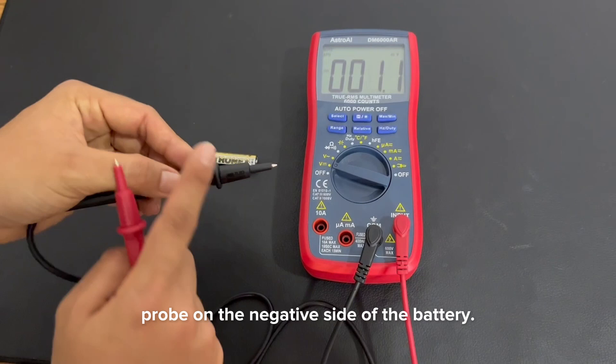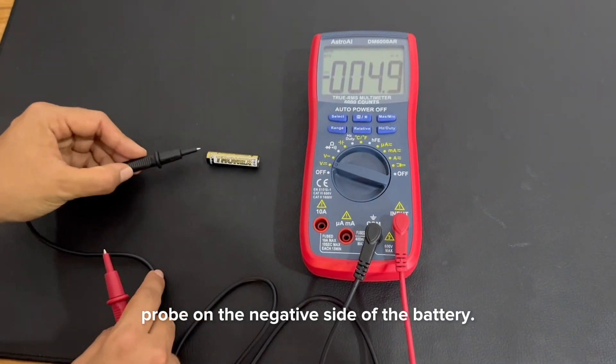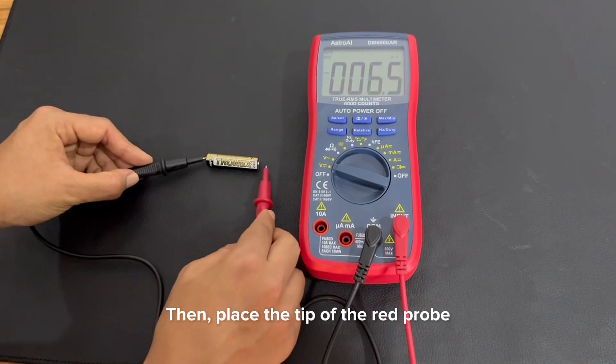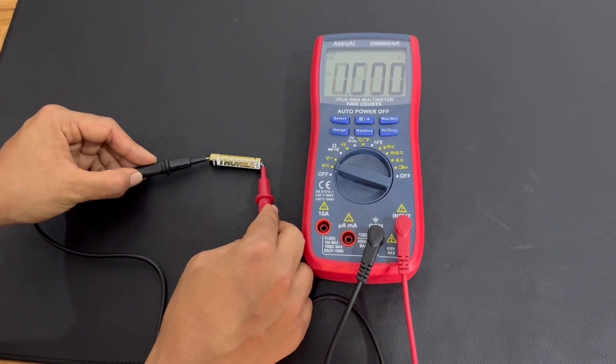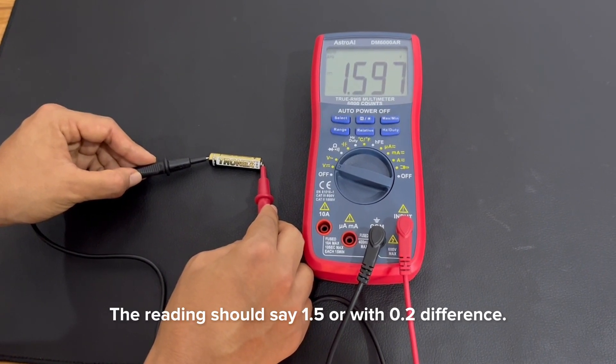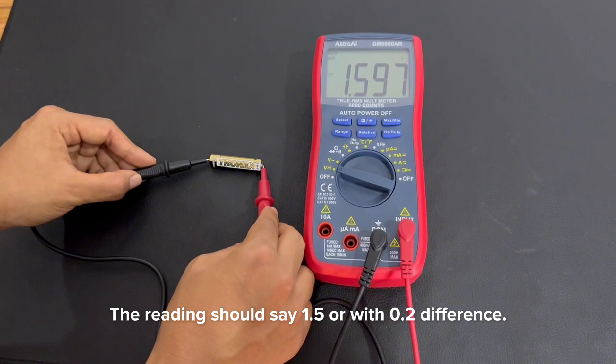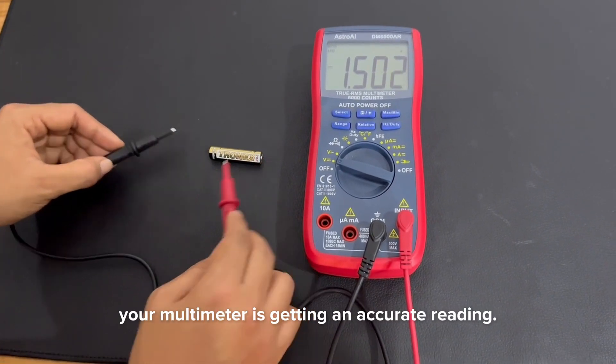Now, place the tip of the black probe on the negative side of the battery. Then, place the tip of the red probe on the positive side. The reading should say 1.5 or with 0.2 difference. This means that your multimeter is getting an accurate reading.